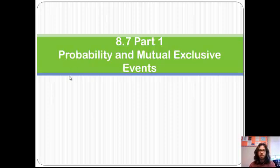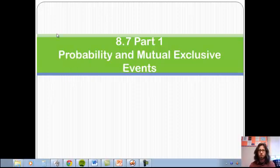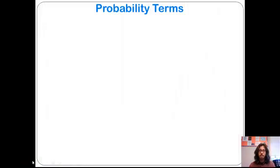So here we have chapter 8.7, part 1. I'm probably going to try to squeeze together part 1 and part 2, but not for this particular piece. So here we're going to be looking at probability. We looked at different outcomes and things like that, and that's going to very much play into what we're going to do here.